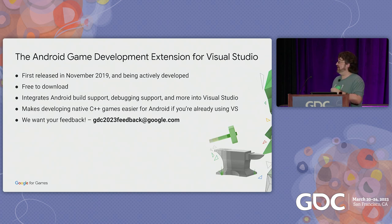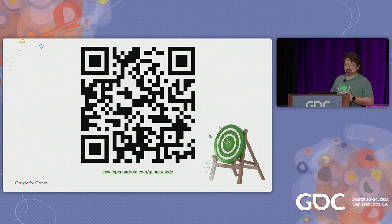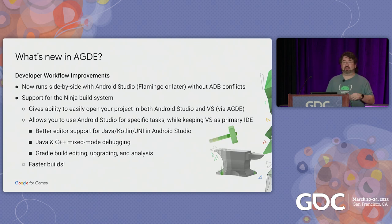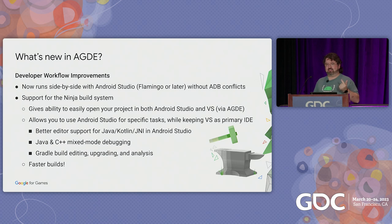We want your feedback — please send us emails and let us know. I'll bring that email back up at the end of the talk, and I'll bring this slide up again, so don't go grabbing your cell phone just yet. You can download it from here. So what's new in AGDE this year? We've got developer workflow improvements. One of the things we've changed is it now runs side-by-side with Android Studio, Flamingo or later — currently we're on Electric Eel and the canary build is Giraffe — without ADB conflicts.